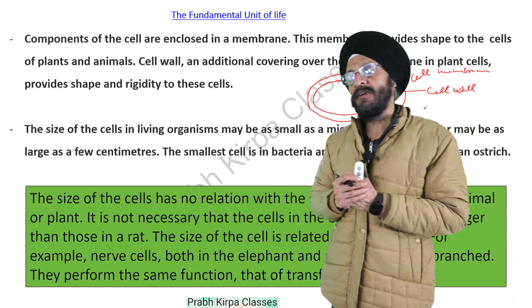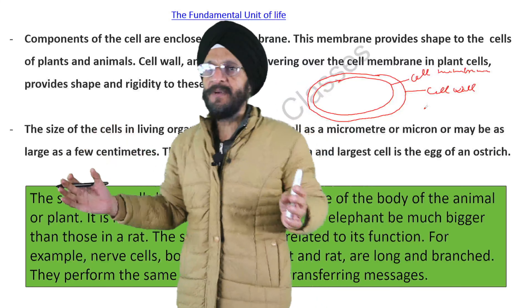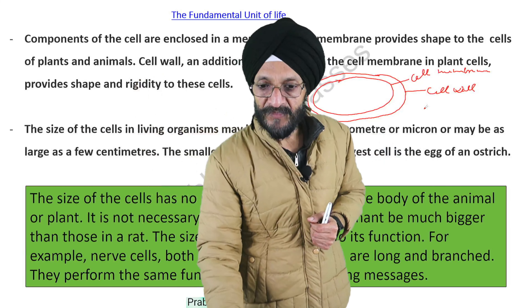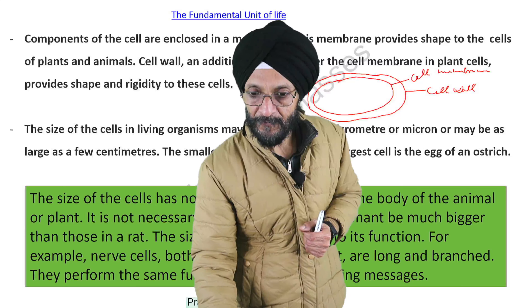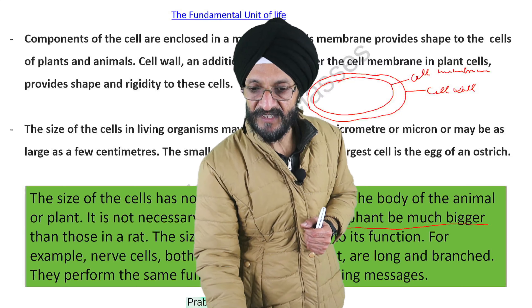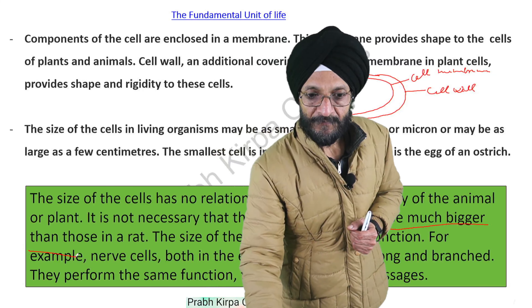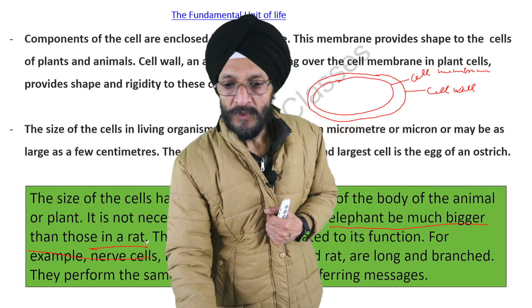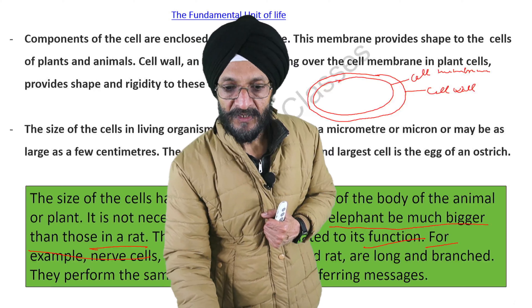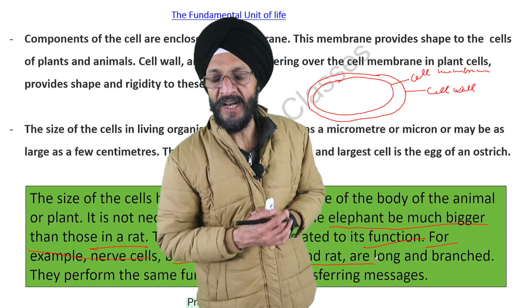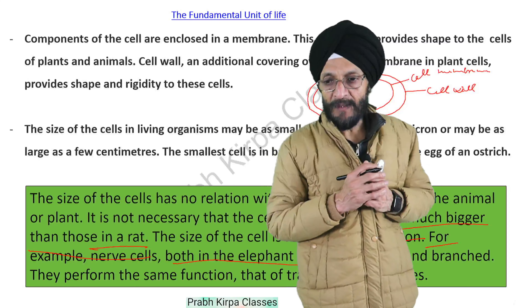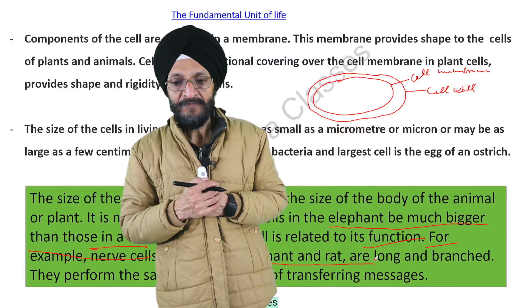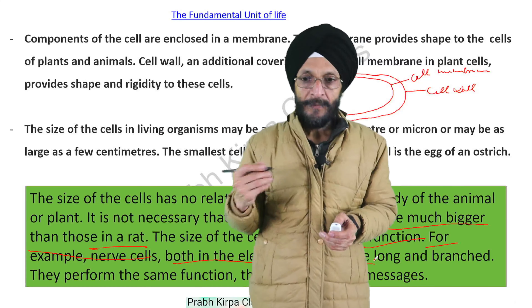We should not think that if the size of a plant or animal is big, the size of the cell present inside it will also be very big. For example, it is not necessary that the cells in an elephant be much bigger than those in a rat. The size of the cell is related to its function. Nerve cells both in the elephant and rat are long and branched, as they perform the same function — the transferring of messages.